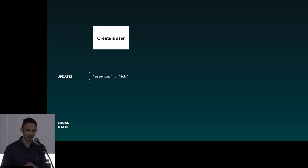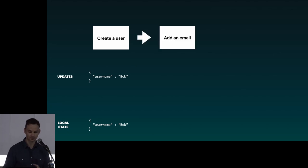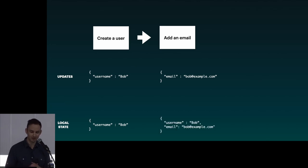Raise your hand if you're not familiar with JSON. No one raised their hand — great. So the local state is just going to be that. Here, our local state is now 'username is Bob.' Next event: we want to add an email to this user. Here's our update — here's the email, bob@example.com. Now our local state is username Bob, and after applying the second event we've got email bob@example.com.